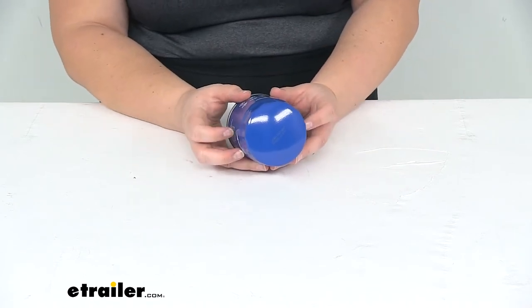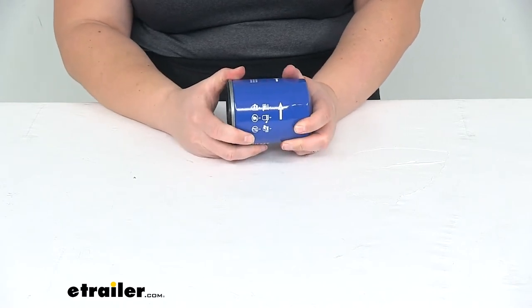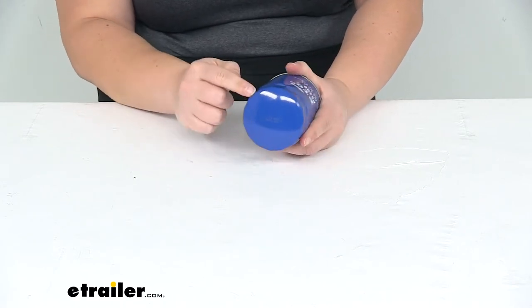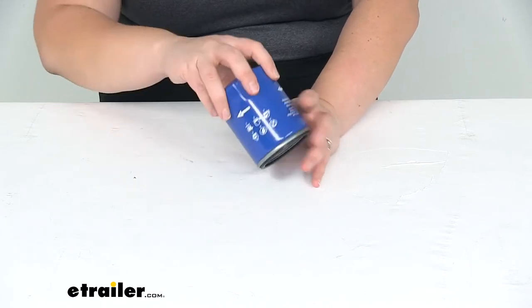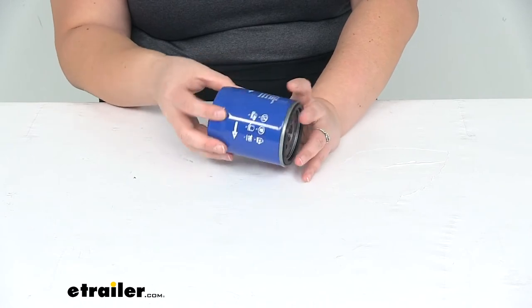The canister is made of a heavy gauge steel to help protect it from any kind of damage during installation. You'll notice that the little flats around the edge—that's going to be to help you get a hand on if you use an oil filter removal tool.